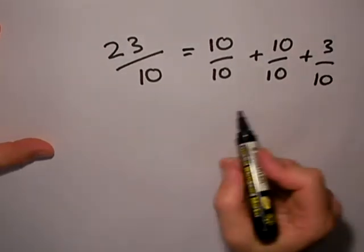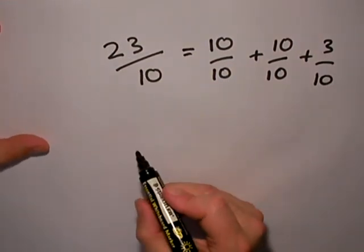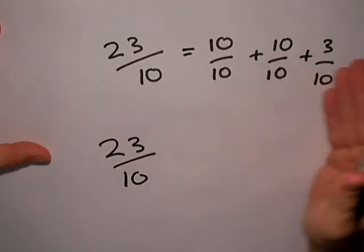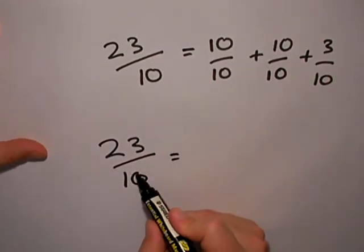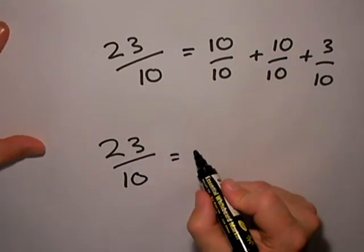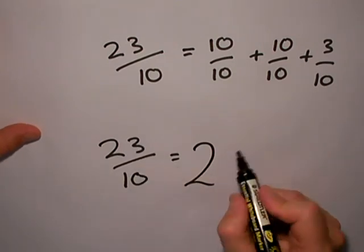How many times does ten go into 23? Again, I wouldn't normally write out all that. I would think to myself, how many times does ten go into 23? It goes in two times altogether—two whole ones I can make with three left over.